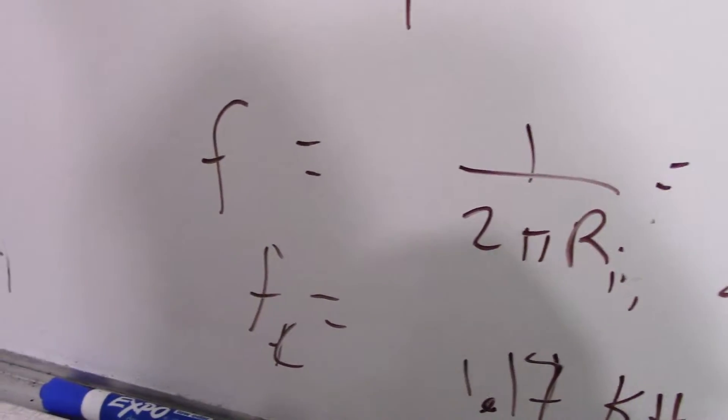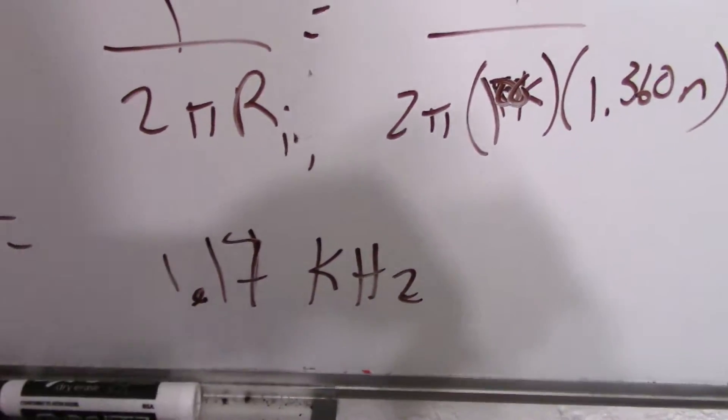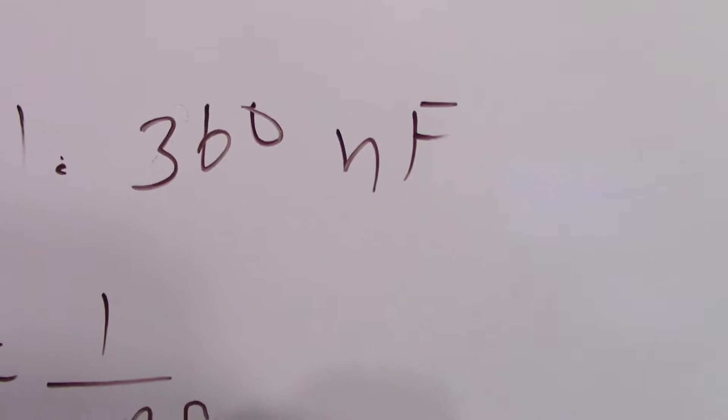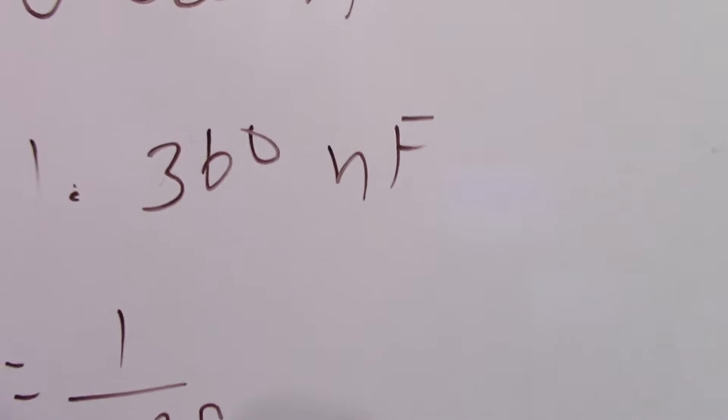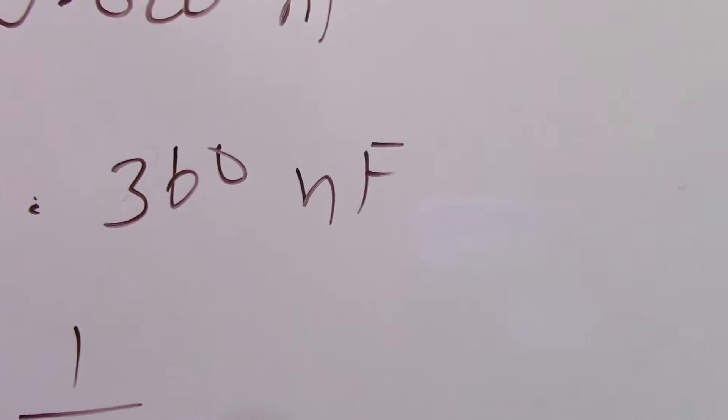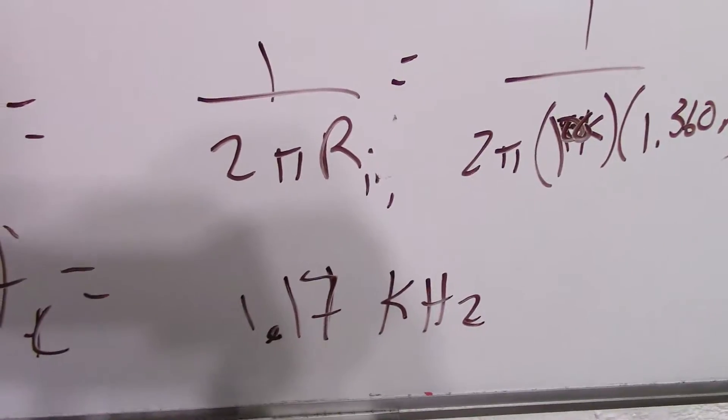It turns out it's roughly one kilohertz for what capacitor I'm using. So I'm using 1.360 nanofarads, and that'll give me a unity gain at 1.17 kilohertz, roughly.